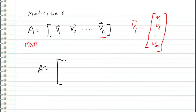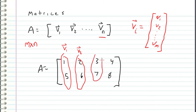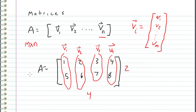Coming back to our example — 1, 2, 3, 4 in the first row and 5, 6, 7, 8 in the second row — we can think of this matrix as a vector of vectors, where [1, 5] is v1, [2, 6] is v2, and these are v3 and v4. The dimension of these vectors is 2, and the number of vectors is 4. So this matrix A is a 2 by 4 matrix; it has a size of 2 by 4.